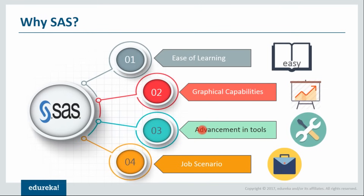The next point is advancement in tools. SAS has been in the market for more than 50 years, so it follows a structure. No matter what kind of change comes in the market, when advancements are made they are very much up to the market and beat almost every tool. And finally, the job scenario: people normally turn to SAS to get good jobs, and they're not disappointed most of the time. SAS holds 70% of the analytical job market. The second competitor holds some 15% of the market — way less than the 70% which SAS has.